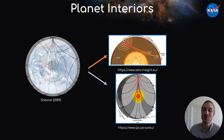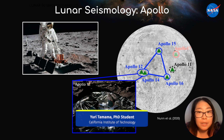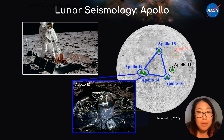As it turns out, we can do this on other planets as well. Over the past several decades, many missions have deployed seismic instruments in space. For example, in the 60s and 70s, the Apollo missions deployed seismic instruments across the near side of the Moon.